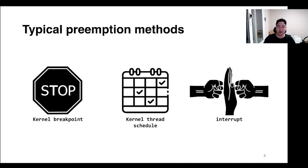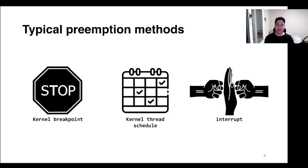So which method can preempt the thread execution? Our first thought is kernel breakpoint — if a kernel breakpoint exists in the time window, the kernel stops running, and as a result it can increase the time window. Second, by manipulating the scheduler, we can increase the time window by context switching to another process while the time window is running. Lastly, some kind of interrupt received while executing the kernel causes the kernel to stop running and execute the interrupt handler first, and as a result the time window is increased.